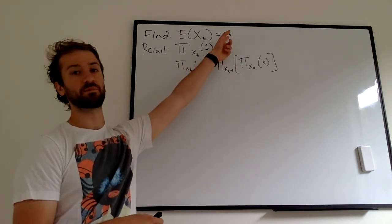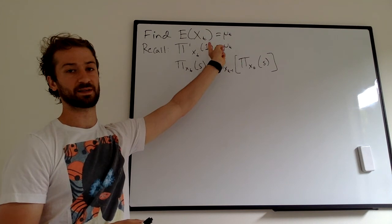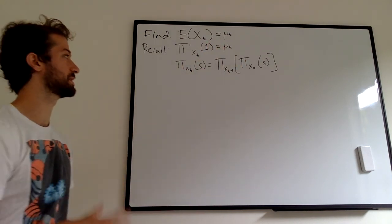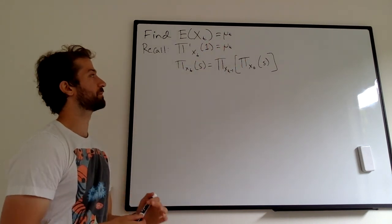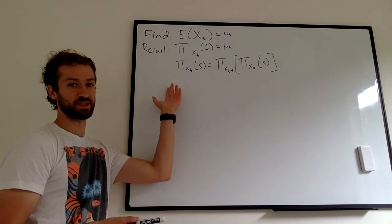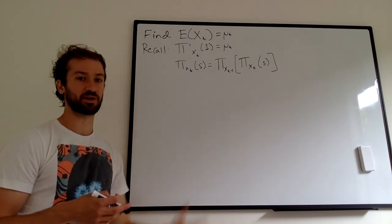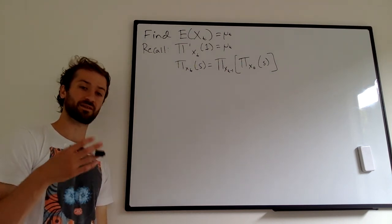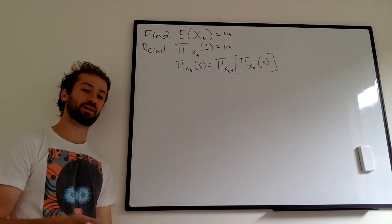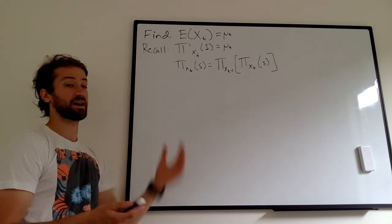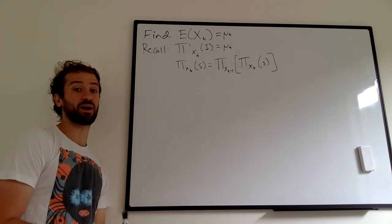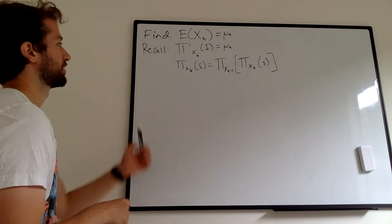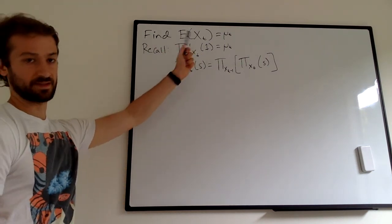Our shorthand is going to be mu sub t for the expected value of X sub t. You can already see those PGFs — probability generating functions — on the board. Even though we took a couple of videos to learn what PGFs were, you can see how they serve us quite well in dealing with branching processes.